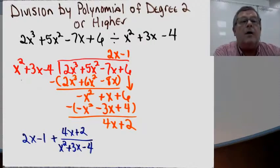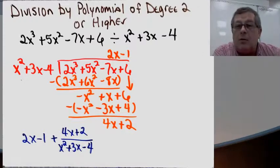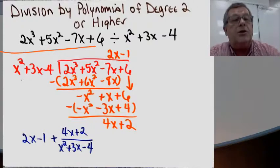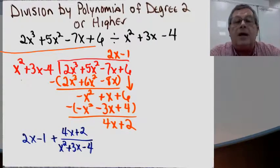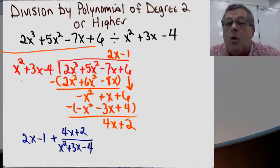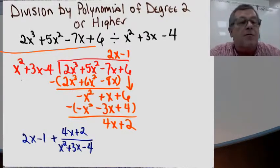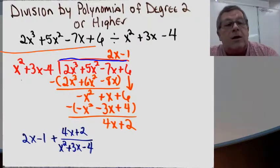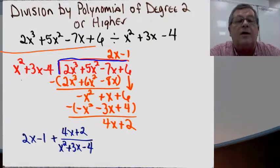Now I'm going to move forward and do long division of a polynomial with a degree-2 or higher divisor. Here I've got 2x cubed plus 5x squared minus 7x plus 6, and I'm being asked to divide it by x squared plus 3x minus 4. I set it up the same as before: x squared plus 3x minus 4 as my divisor, and 2x cubed plus 5x squared minus 7x plus 6 as my dividend.